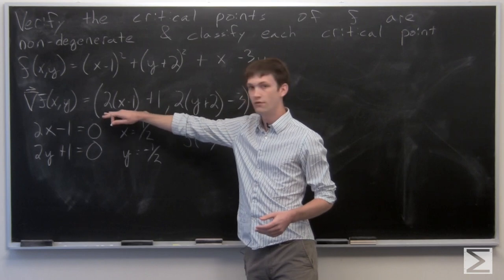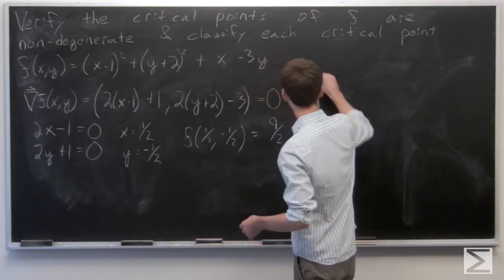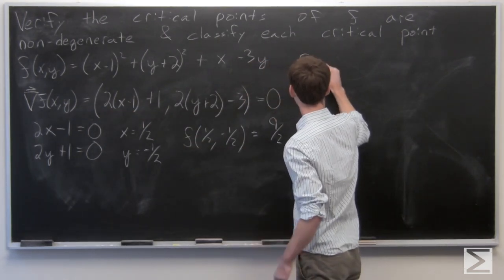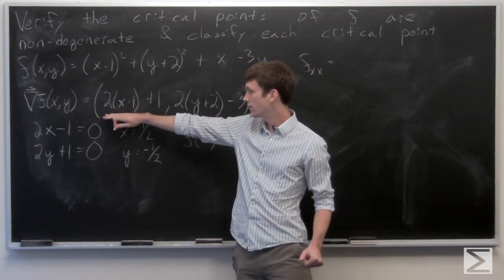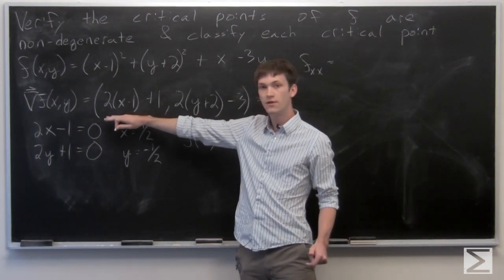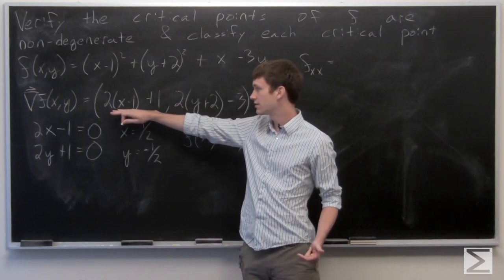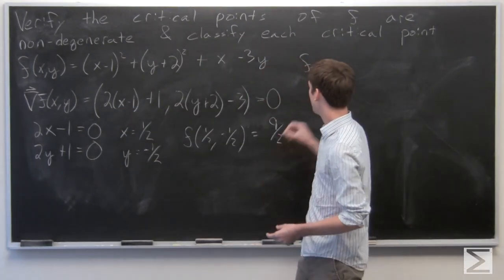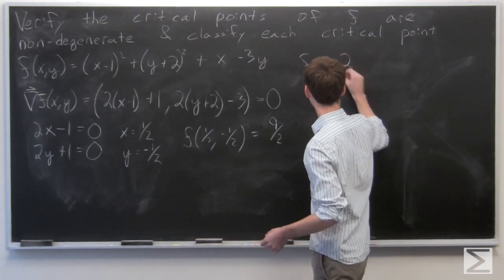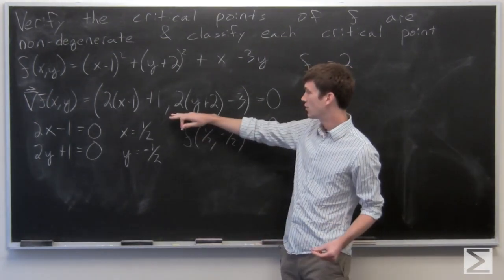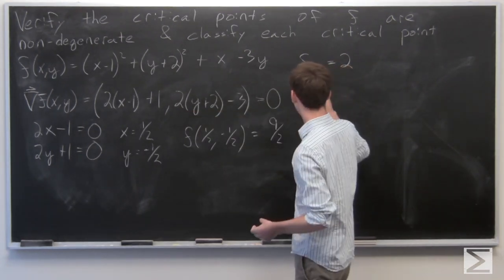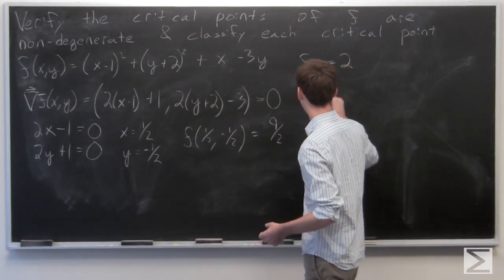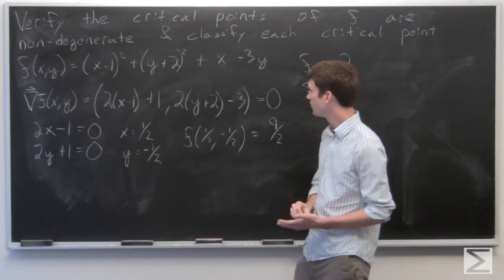We have our partial derivative of f with respect to x. So we'll take the partial derivative of f with respect to x is 2. And partial derivative of the second component with respect to y, f_yy, is also 2.